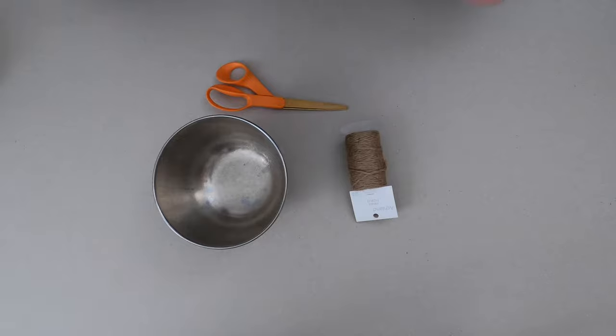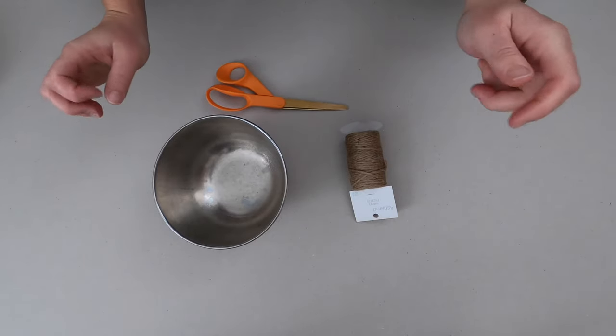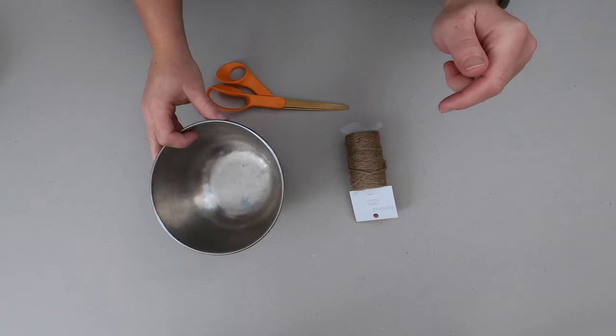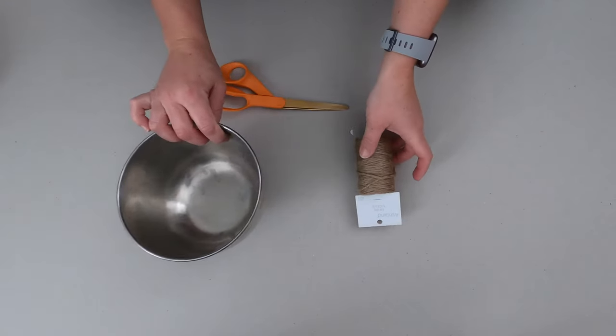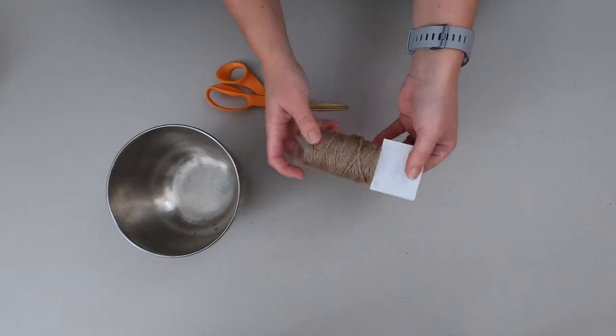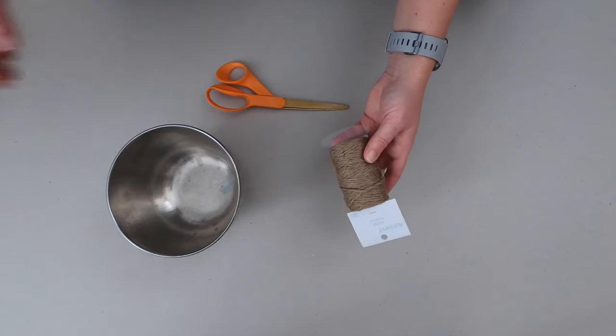So to create a hanging planter what you're going to need is a metal bowl. You can also use glass but I found metal at my thrift store. Some sort of rope that you can use.